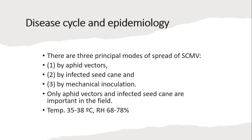Regarding the disease cycle and epidemiology, there are three principal modes of spread of sugarcane mosaic virus: by aphid vectors; by infected seed canes, which are the sets of sugarcane — if infected, they will also spread the disease; and by mechanical inoculation through equipment or cutting tools used on the sets.